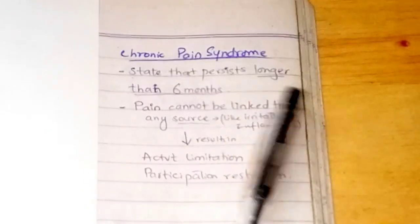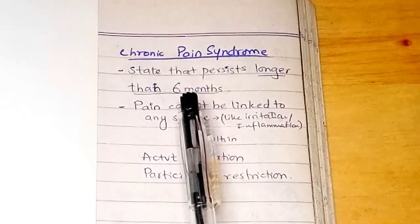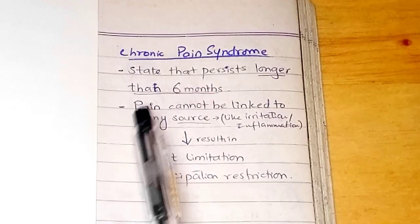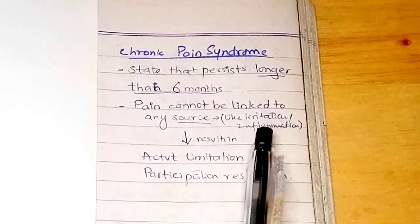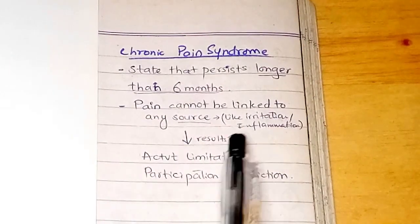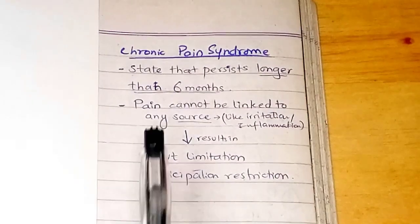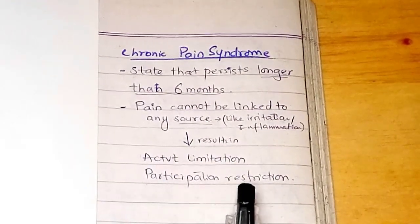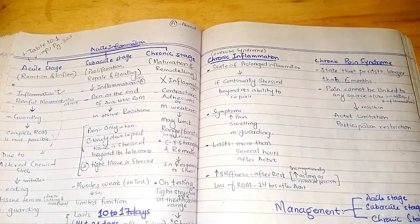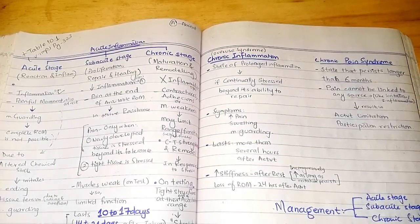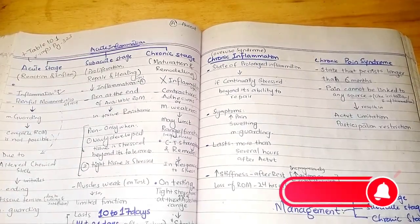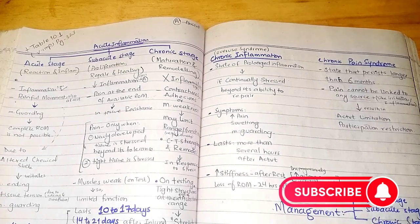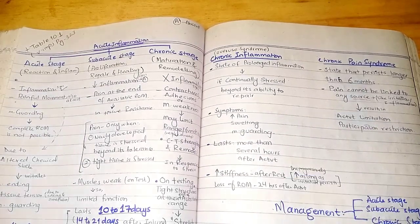Chronic pain syndrome is a state that persists longer than six months, with pain that cannot be linked to any source such as irritation or inflammation. This pain can lead to activity limitation and participation restriction. That was all about the stages of inflammation — subacute stage, chronic stage, chronic inflammation, and chronic pain syndrome. I hope you found this video helpful.